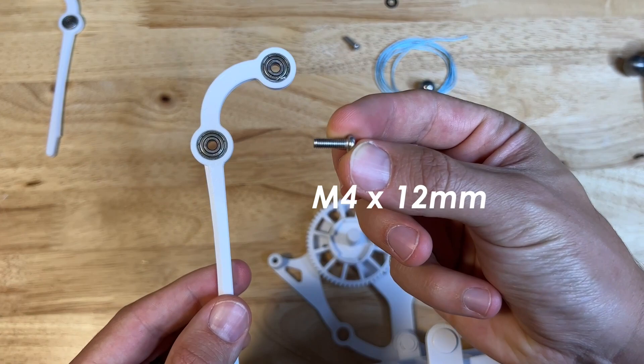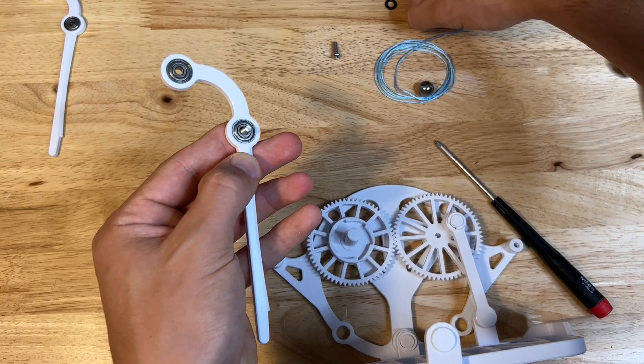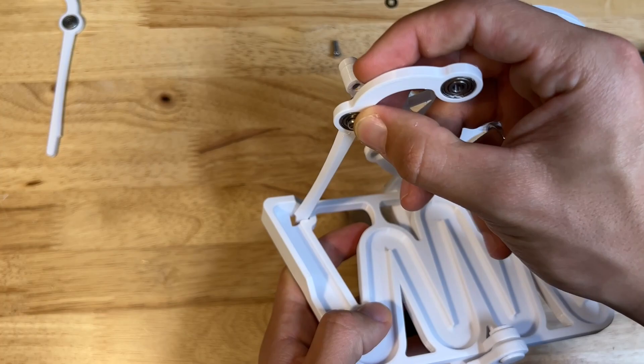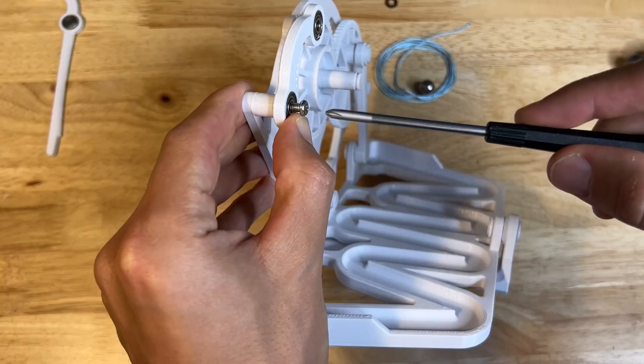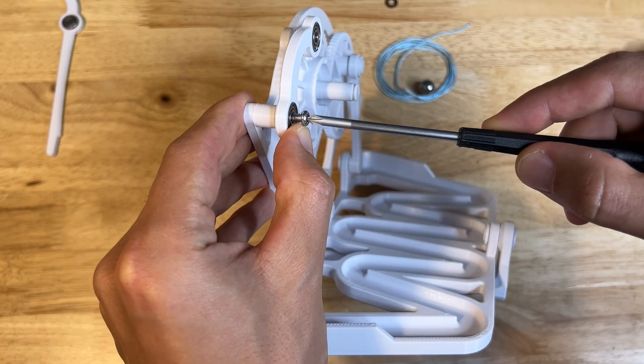Next, using an M4 by 12 millimeter screw, place that into the trigger. Throw one or two washers onto that, and make sure that they go in through the hole in the ramp and they're facing this orientation on the base. Screw it in and make sure that everything is moving freely.